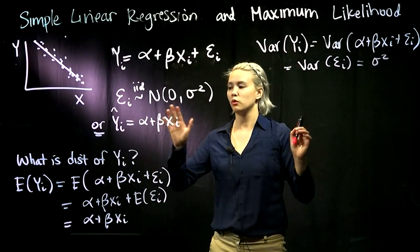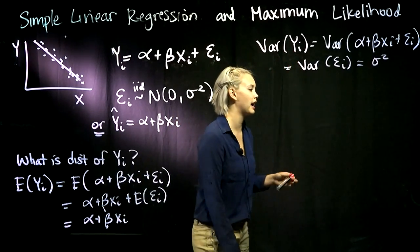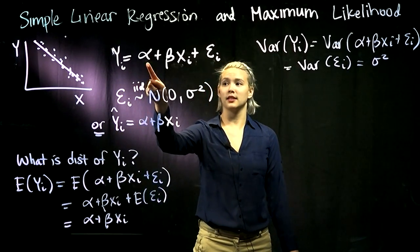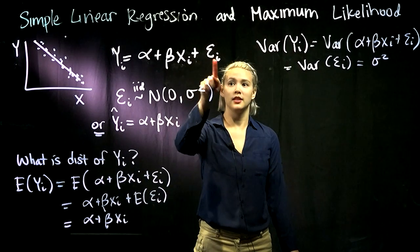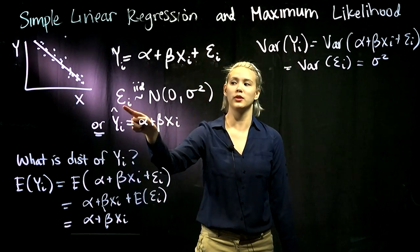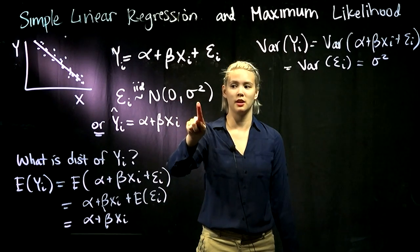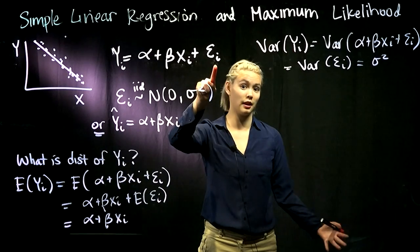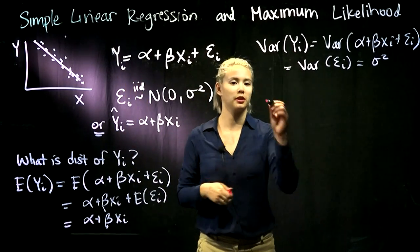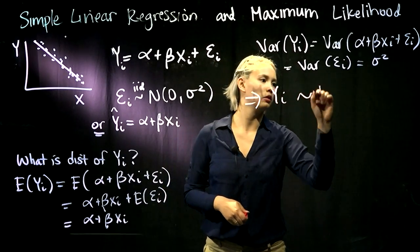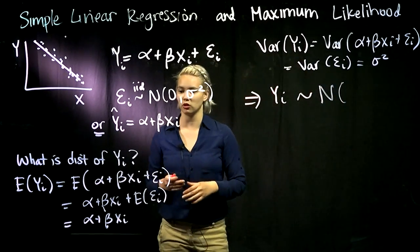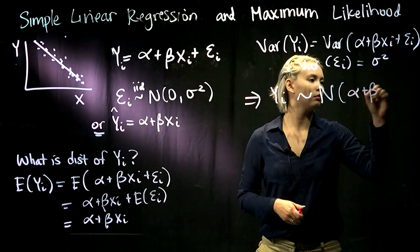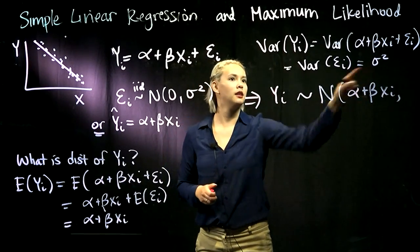So we have the expectation of Y_i and the variance of Y_i. The last thing to know is the overall distribution. The constants drop out, and since epsilon_i is normally distributed with mean zero and variance sigma squared, adding a constant to a normally distributed variable means Y_i is also normally distributed — with mean alpha plus beta X_i and variance sigma squared.